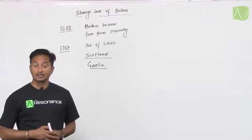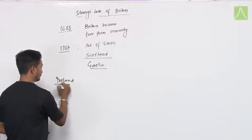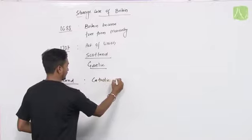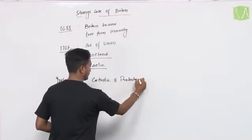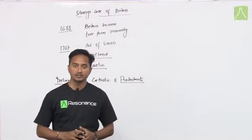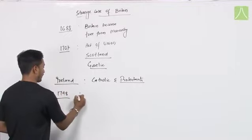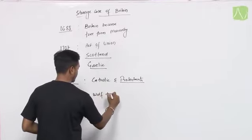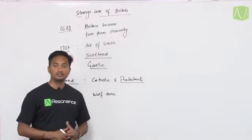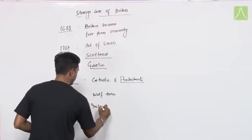Scotland was not the first or last country Britain started influencing. The next target was Ireland. Ireland had two communities — Catholics and Protestants — in which Protestants were in majority. Britain started supporting Protestants and oppressing the Catholic community. The Catholic community revolted in 1798, and the revolutionary was Wolf Tone. Britain suppressed the revolt led by Wolf Tone and his Irish supporters, and finally in 1801, Ireland became part of Britain.